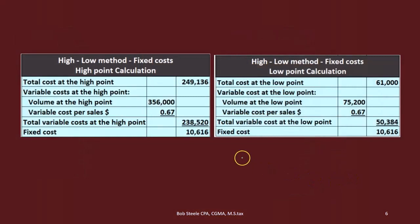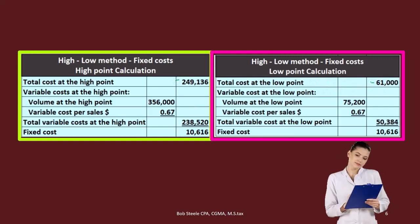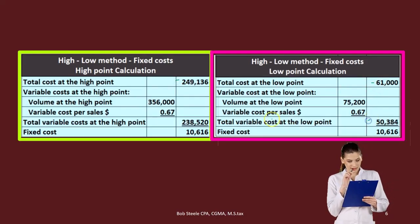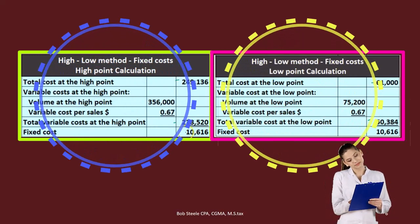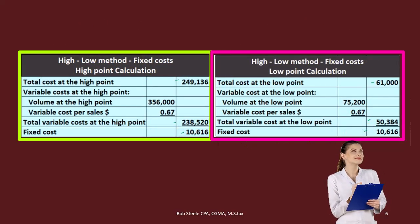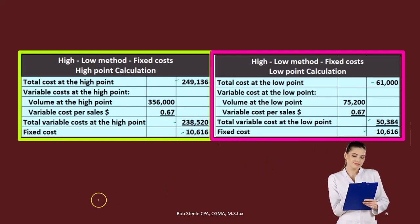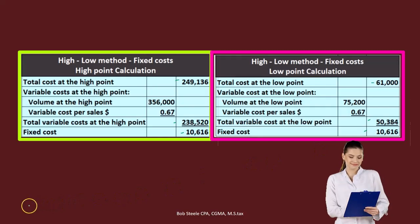We can see that at the high point the total cost is much larger than at the low point, and the variable portion is highly different — that's what changes. The fixed portion is what remains the same in this calculation. That's exactly what we would expect at the two extreme points using this high-low method.